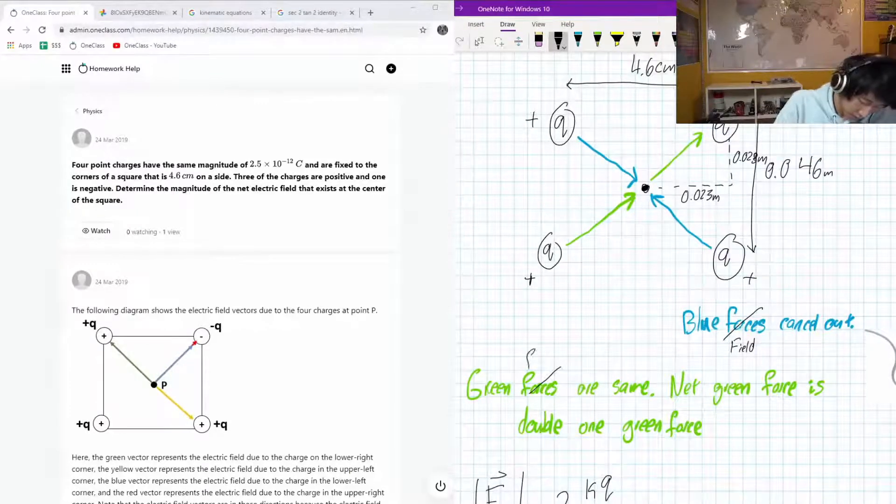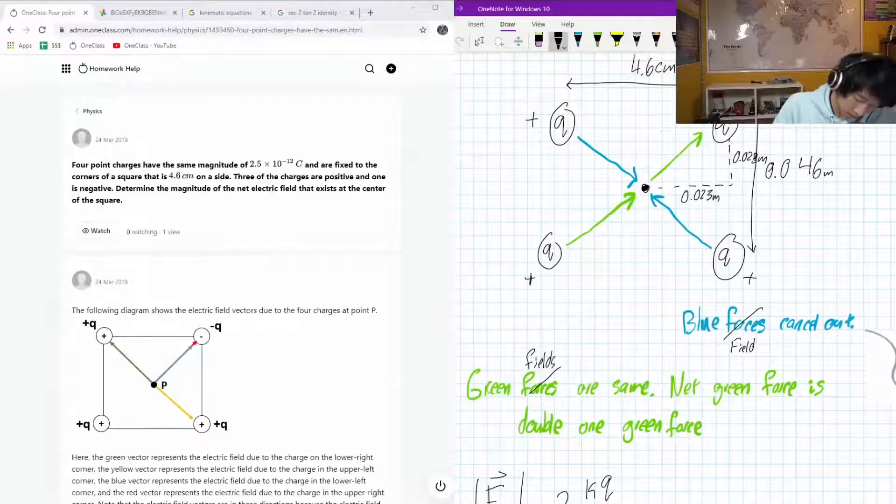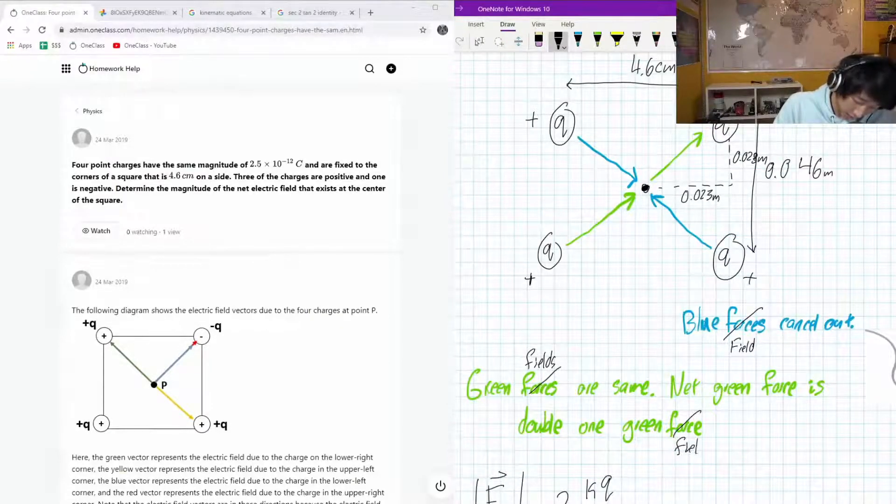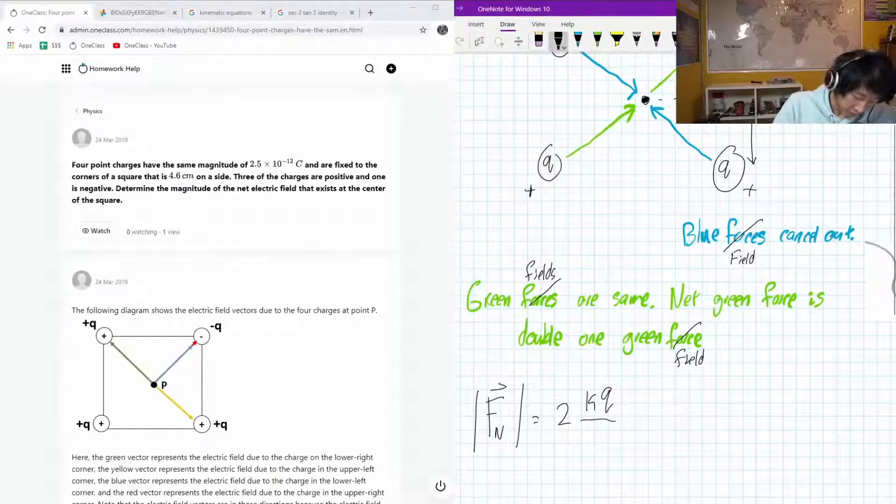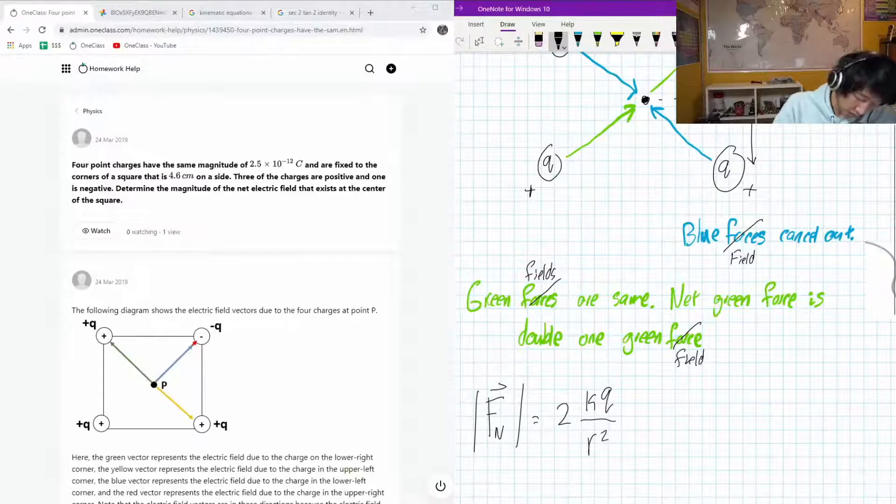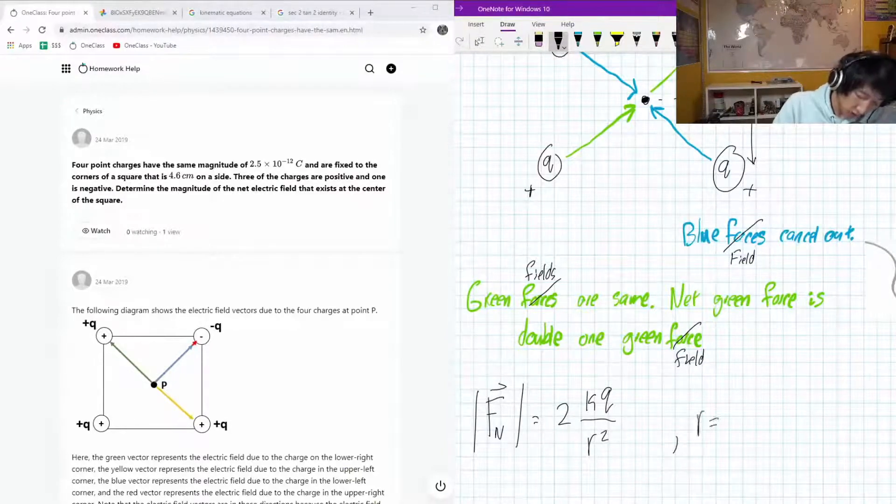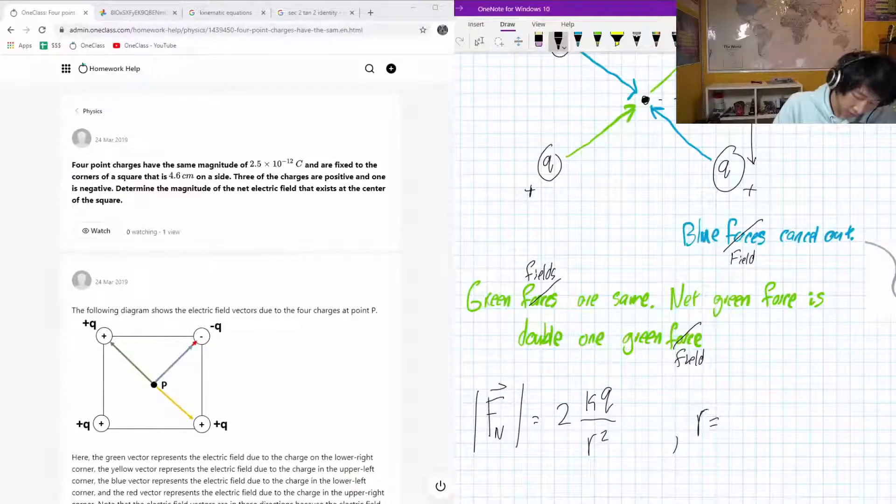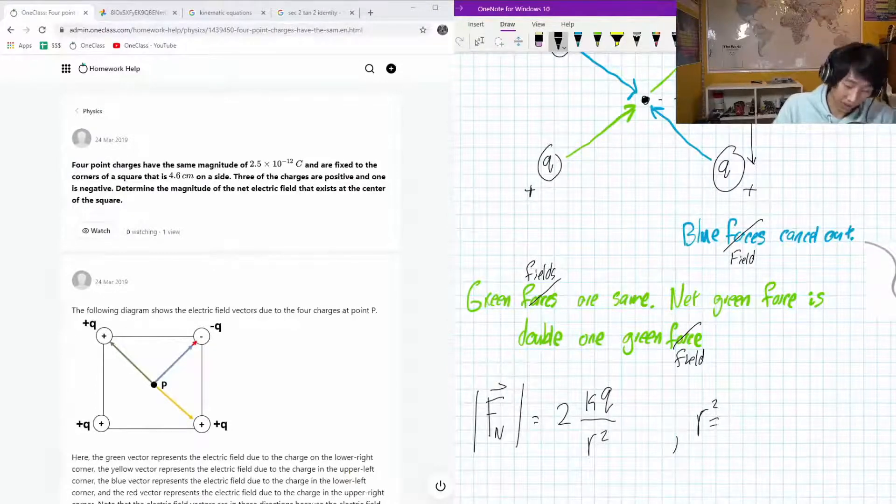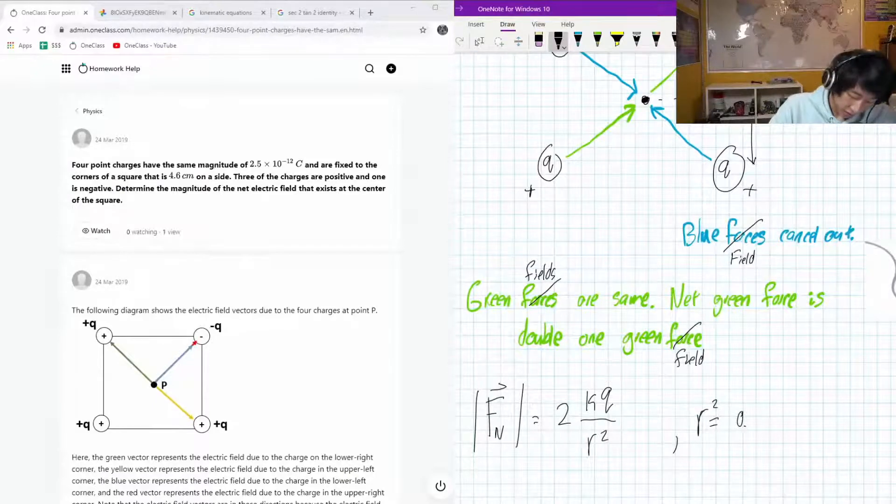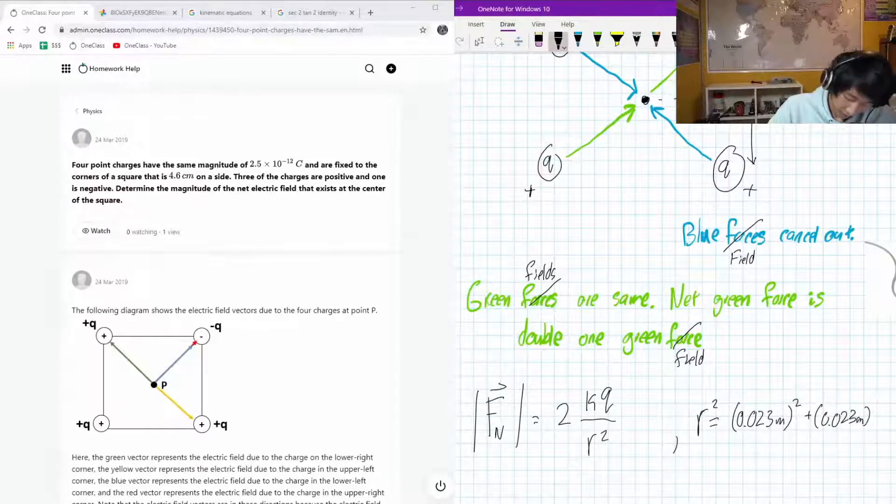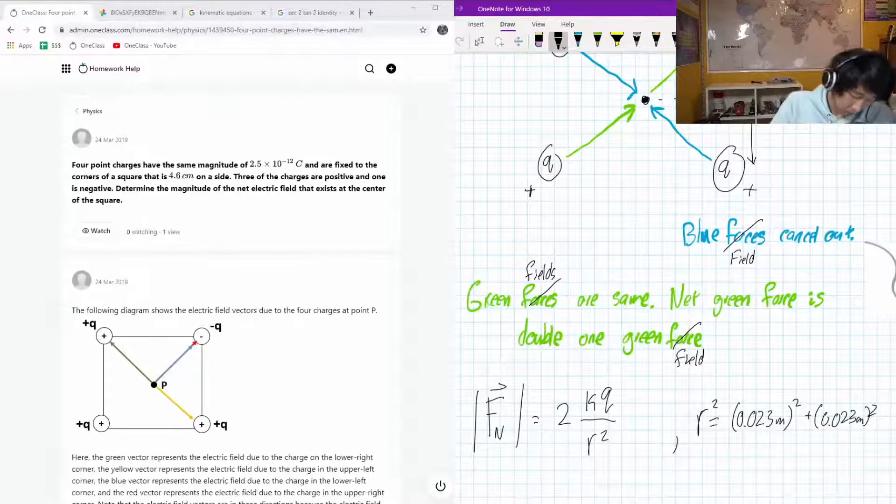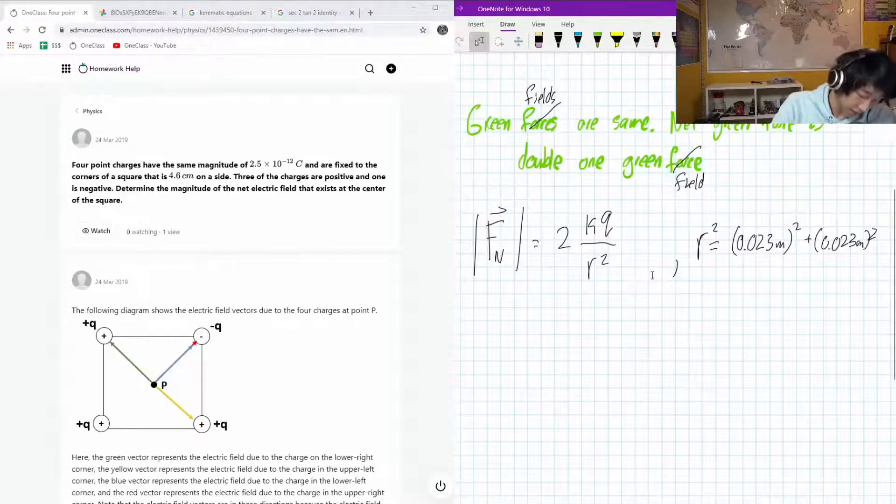It's just going to be KQ over R squared, and R squared or R on its own - r squared is actually going to be the hypotenuse, so it's just going to be 0.023 meters squared plus 0.023 meters squared. Okay, so we can just sub in our numbers and we can find our net force here.